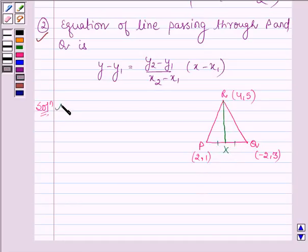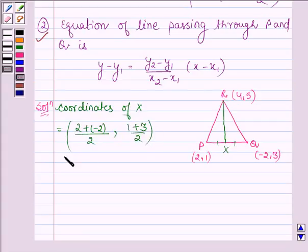The coordinates of X are given by the midpoint formula: ((2 + (-2))/2, (1 + 3)/2) = (0, 2). So the coordinates of point X are (0, 2).